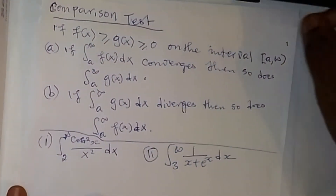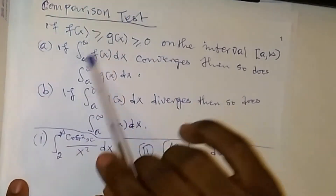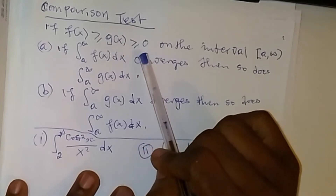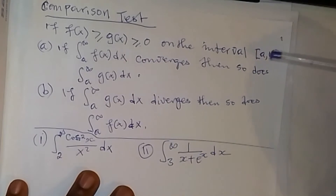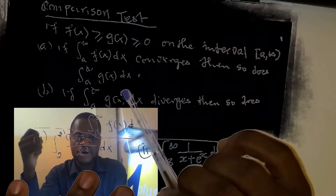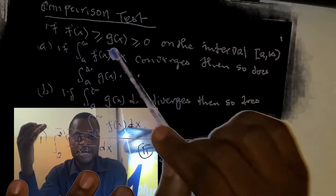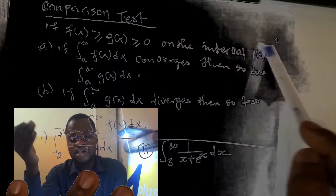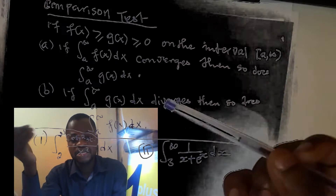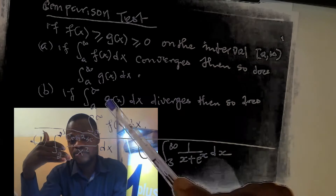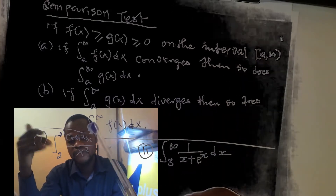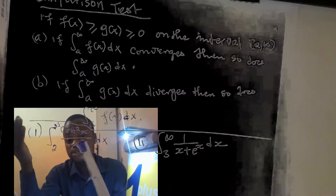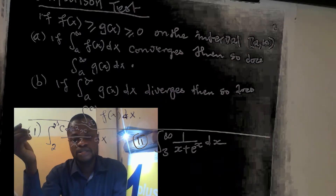Good evening ladies and gentlemen. In today's tutorial we are going to look at a comparison test — why it is so important to use comparison test to determine whether an integral is convergent or divergent, and also how we can use it to approximate the area, or to approximate the integral of a function. By definition, the integral of a function is just the area under the curve, so if the function cannot be integrated easily, we can determine whether we can find the approximate area.